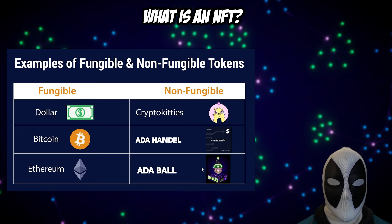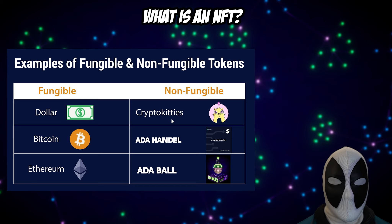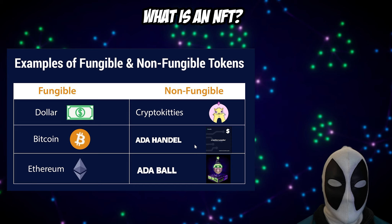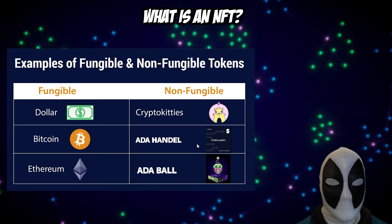Examples of non-fungible tokens include CryptoKitties, which was a big craze a couple of years back. Another example is ADA Handle. ADA Handle is a great example of using an NFT for utility — you can buy an ADA Handle, an NFT that sits in your wallet, that makes it easier for people to find your wallet on the blockchain. You can assign a name or a series of letters, so I have 'Credit Crusader' as my ADA Handle.